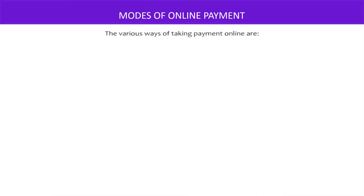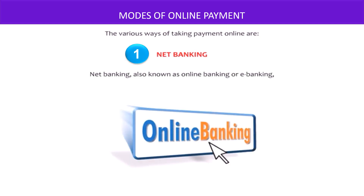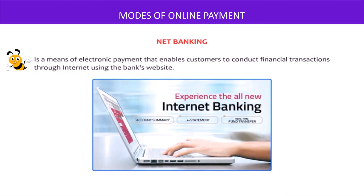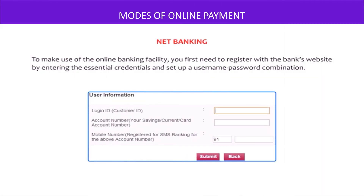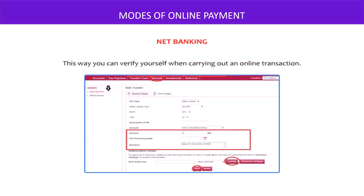The various ways of taking payment online are: Net banking. Net banking, also known as online banking or e-banking, is a means of electronic payment that enables customers to conduct financial transactions through the internet using the bank's website. To make use of online banking facility, you first need to register with the bank's website by entering the essential credentials and set up a username and password combination. This way you can verify yourself when carrying out an online transaction.